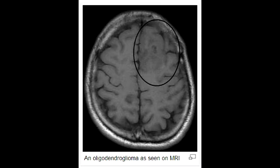What is the classic term used to describe oligodendrocytes and why? The term used to describe oligodendrocytes is the fried egg cells, because they have round nuclei with clear cytoplasm.